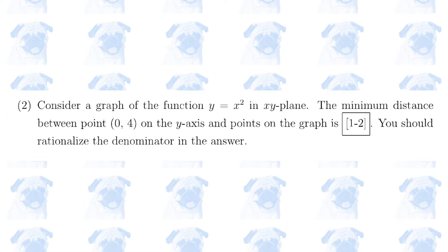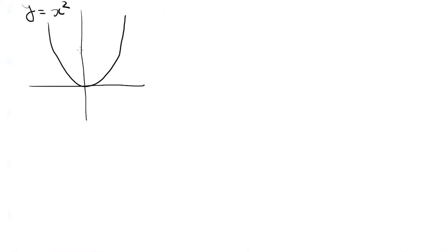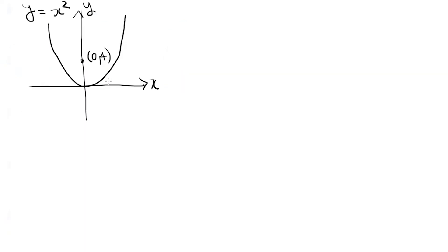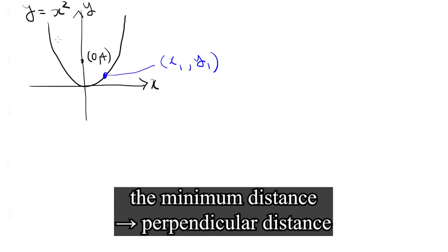Number 2. We have a quadratic function y equals x squared, and we are told that there's a point (0, 4) on the y-axis. We need to figure out the minimum distance between this point and a point on the graph. Let's assume that there's a point on the parabola whose coordinates are x sub 1 and y sub 1, such that the straight line through these two points is perpendicular to the tangent at that point.